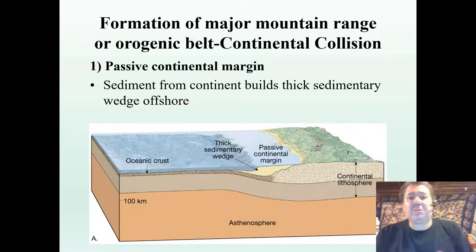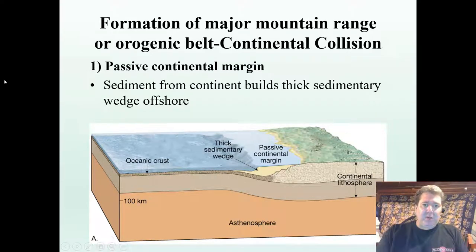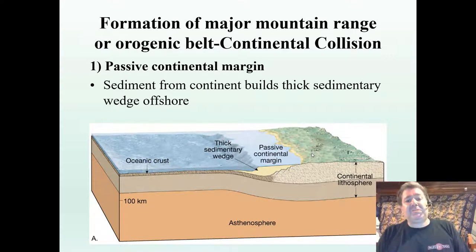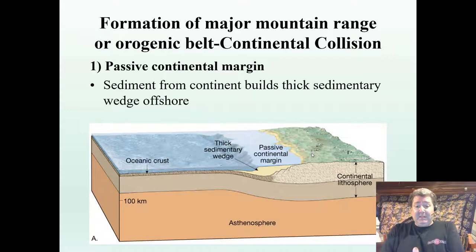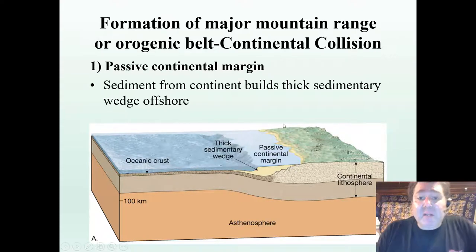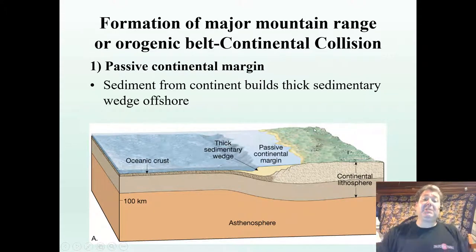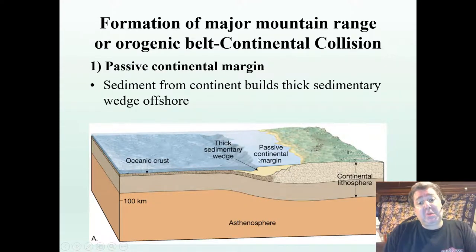Let's take a look first at a passive style margin — this is like our Atlantic seaboard. It's a passive margin; there's no active tectonics happening there. The active tectonics are in the middle of the Atlantic Ocean at the mid-ocean ridge. The Atlantic seaboard is just along for the ride. As streams and rivers bring sediment in and deposit it in the ocean, it creates a very thick continental margin or sedimentary wedge that we call a continental shelf.